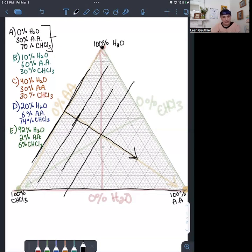Where those two lines intersect, so the 30% acetic acid and the 0% water, that is where you would plot your point.